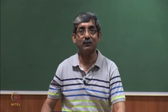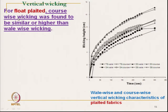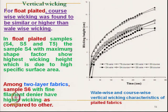Coming to the float plated structure, course-wise wicking was found to be the same as, or a little bit higher than, wale-wise direction. Due to structural difference, wale-wise and course-wise liquid flow is almost the same. In the float plated sample, sample 4 with maximum shape factor shows highest wicking rate due to higher specific surface area.